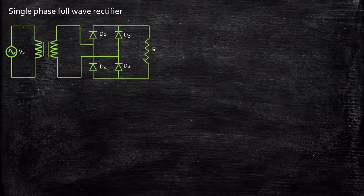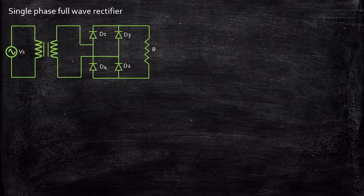But why do we call this a full wave rectifier? In order to understand this, we need to consider the operation of this circuit. Considering the circuit diagram, we have four diodes — D1, D2, D3, D4 — connected in the form of an H-bridge. We also have a transformer connected at the source terminals, and this is not mandatory for the circuit; it totally depends on the requirement. Now let us consider what happens to the circuit during positive half cycle.